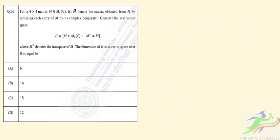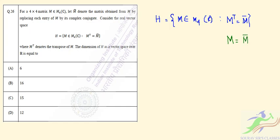So question 26 is saying that for a 4 by 4 matrix M in the complex plane, where M-bar is the matrix obtained from M by replacing each entry by its complex conjugate, we have a real vector space H. The condition given is that M transpose equals M-bar. From here, we can write that M equals the conjugate of the transpose, meaning M is a Hermitian matrix.